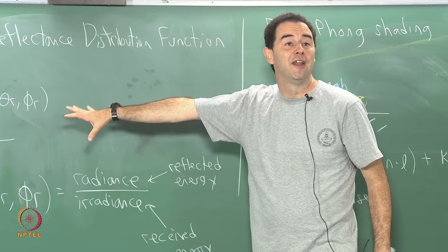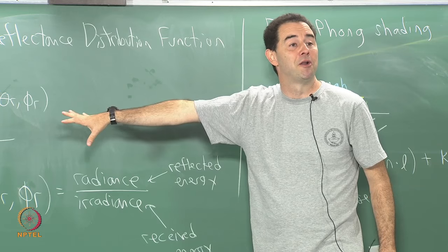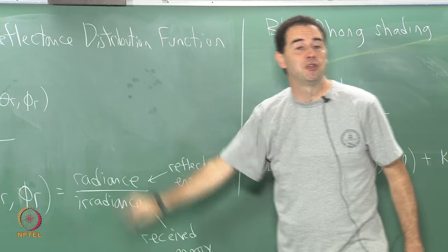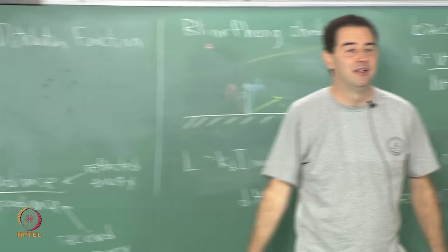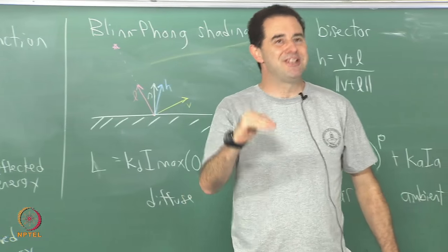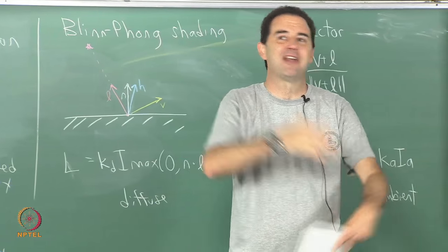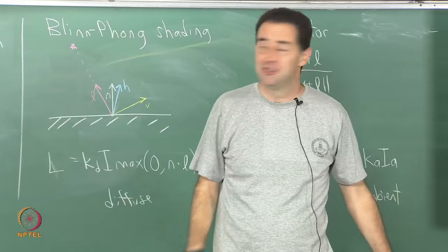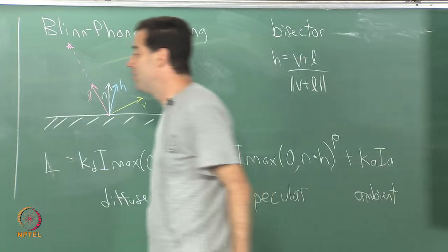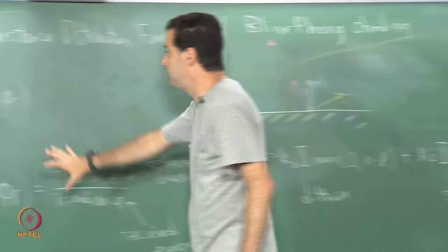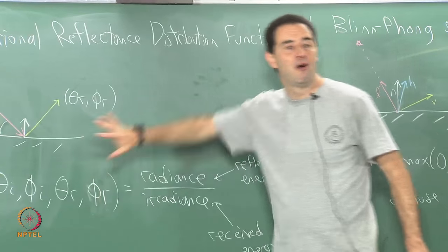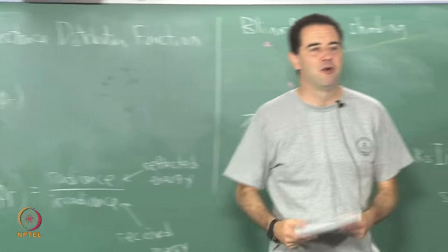If I make the BRDF constant then I get a Lambertian model. That is one special case. That gives you the easiest case, and then you can handle all the other cases through various complicated expressions — you can go off and research that on your own if you like.